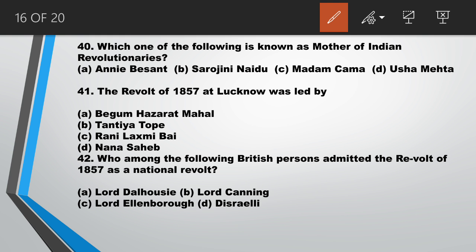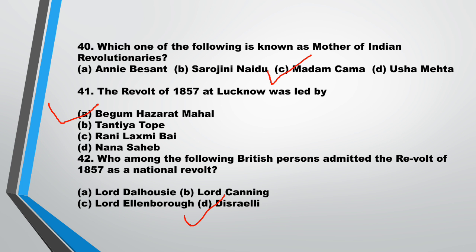Question number 40: which one of the following is known as the Mother of Indian Revolutionaries? Answer is C, Madam Cama. Question number 41: the revolt of 1857 at Lucknow was led by answer A, Begum Hazrat Mahal. Question number 42: who among the following British persons admitted the revolt of 1857 as a national revolt? Answer is D, Disraeli.